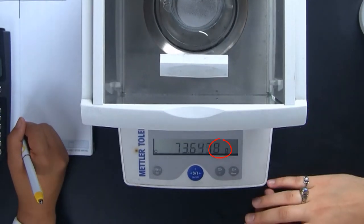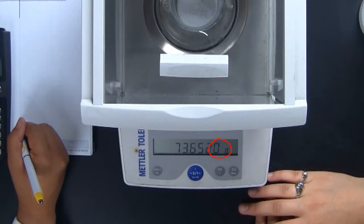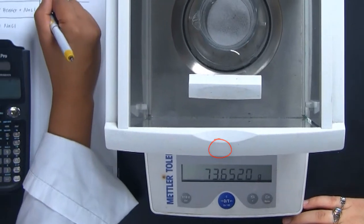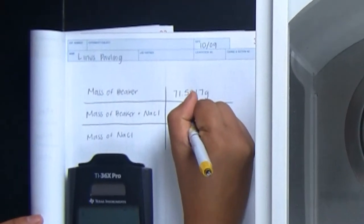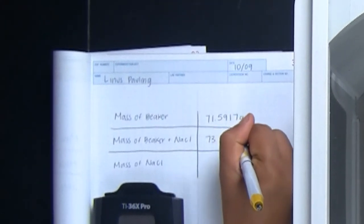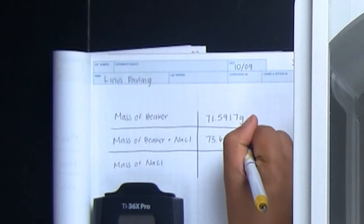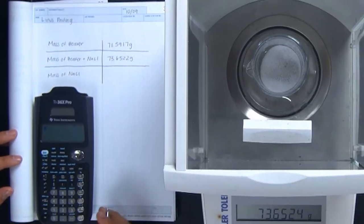She waits for a moment for the balance reading to settle down. Remember, the last digit is the uncertain digit. You may get some fluctuation in that digit, but that is normal. Choose the value that seems to be the most consistent.